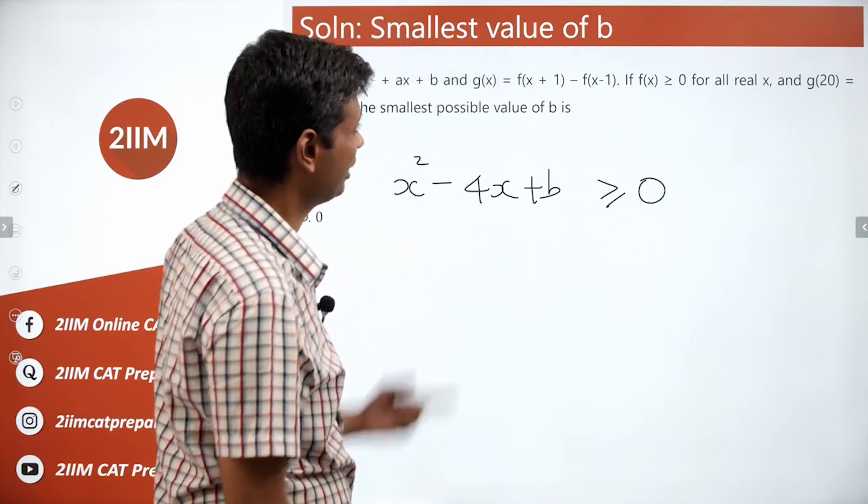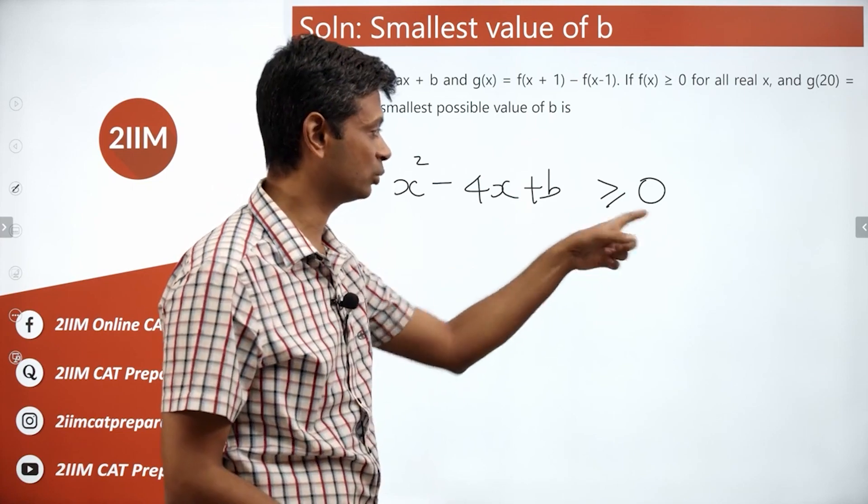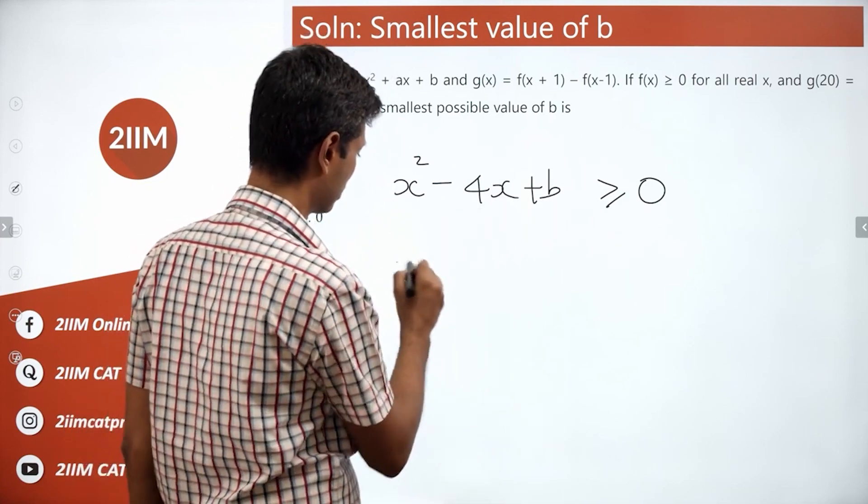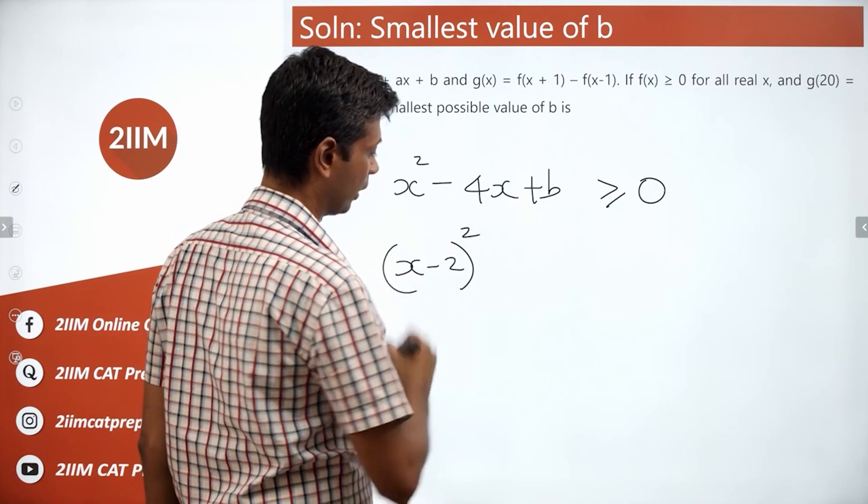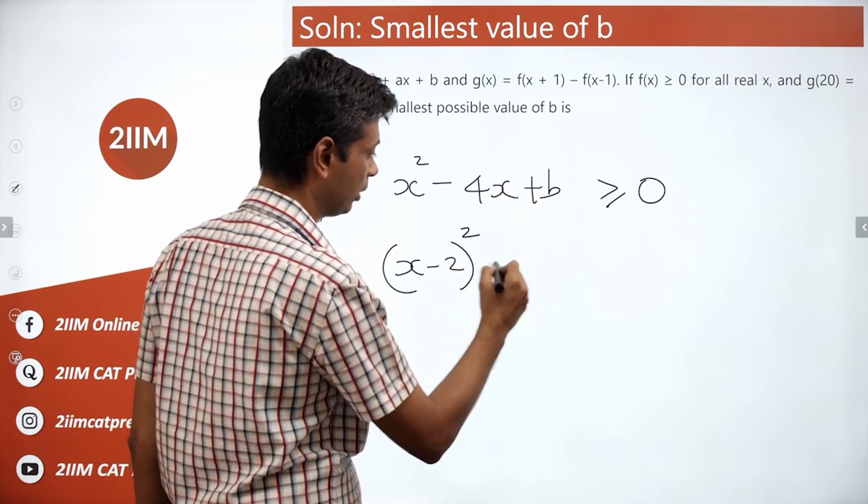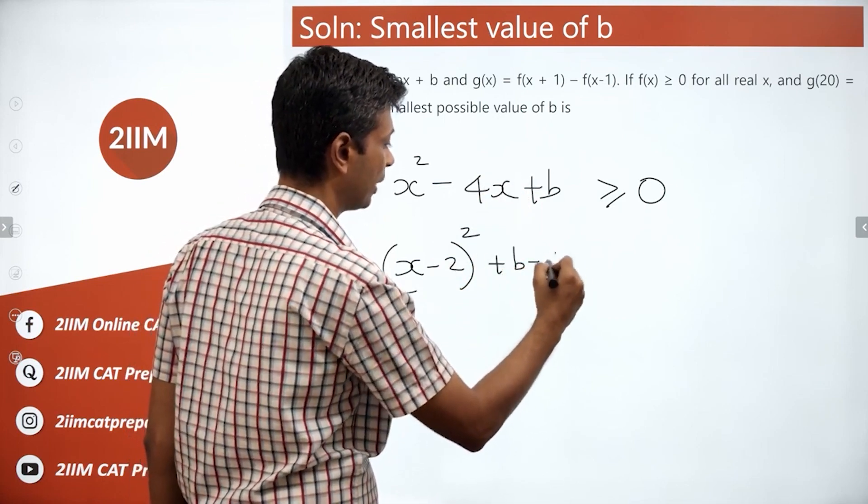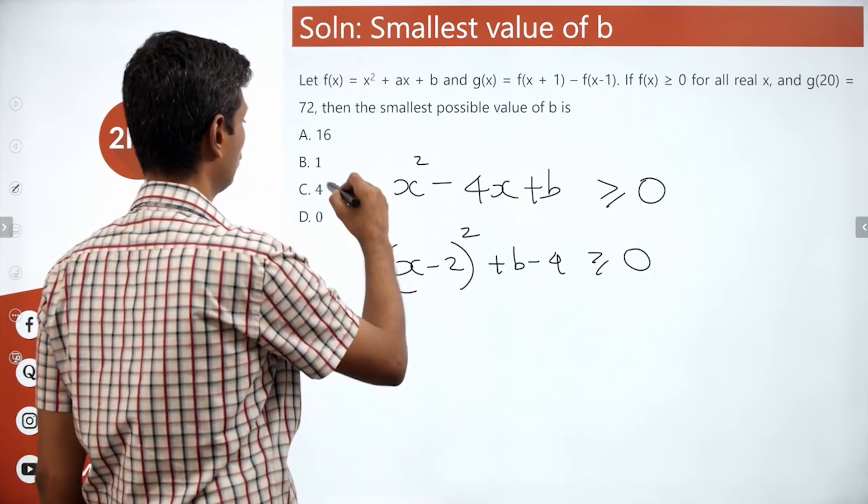What does this mean? This means it can be expressed as a square plus something which will be ≥ 0. x² - 4x + 4 can be written as (x-2)². So this becomes (x-2)² + (b-4) ≥ 0, or b should be at least 4.